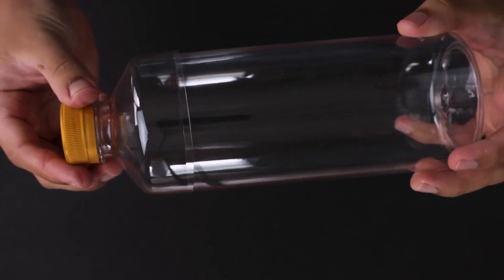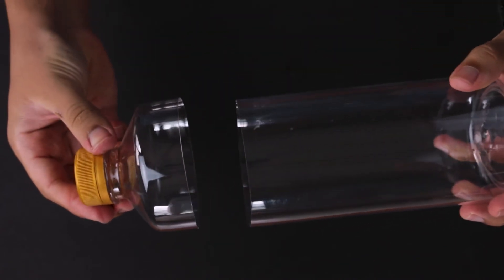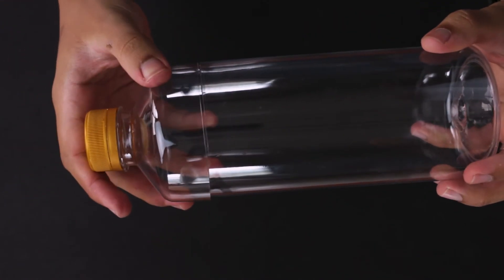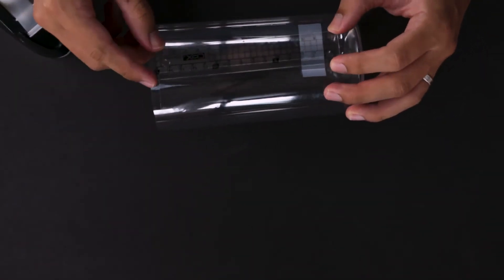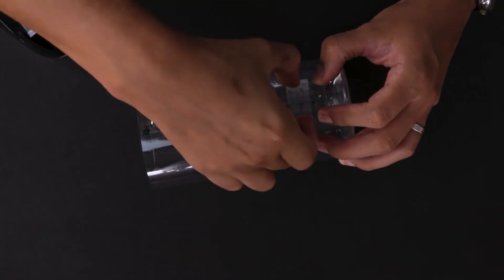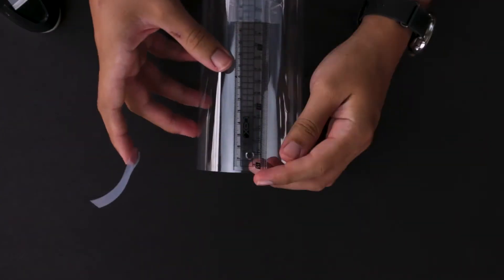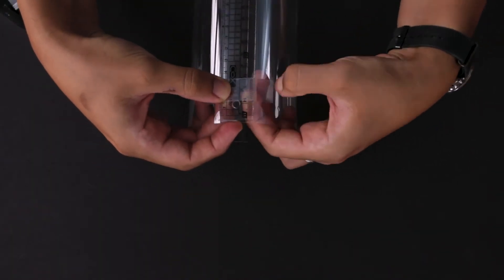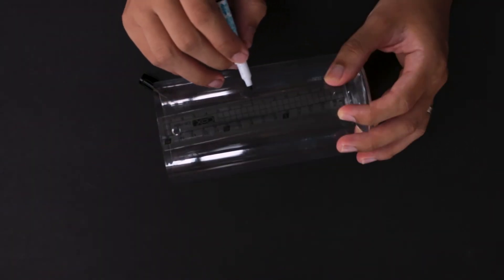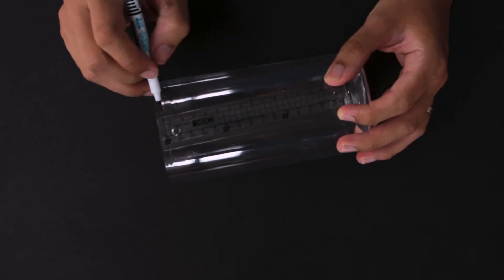Next, tape the ruler onto the bottle. Of course, you don't have to be this precise. You can use your scissors to get the job done more quickly. Next, tape the ruler onto the bottle. Alternatively, you could draw the markings yourself with a marker.